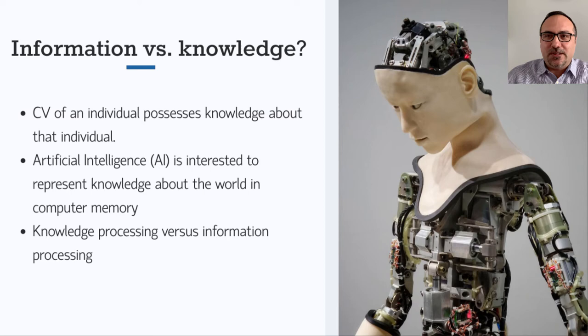For example, in artificial intelligence, which is a subfield of computer science, a long-standing problem of interest has been knowledge representation—a way to represent knowledge about the world in computer memory. However, it is unclear in what way such entities constitute knowledge and not information. AI researchers claim that what they do is knowledge processing rather than information processing, however they do not necessarily explain why their concern is knowledge, not information.